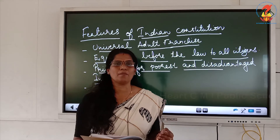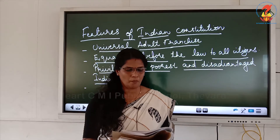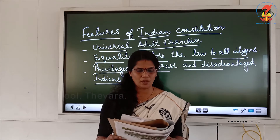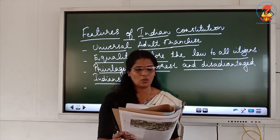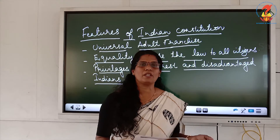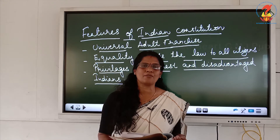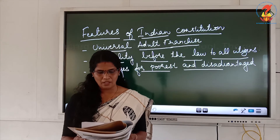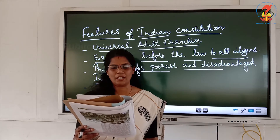In other countries such as the United Kingdom and the United States, this right was granted in stages. First, only men with property or aristocrats had the right to vote, then educated men were added, then working class men after a long struggle, and finally after a bitter struggle, women were granted the vote. Soon after independence, India chose to grant this right to all its citizens regardless of gender, class, or education. People above 21 years of age are allowed to vote in both central and state elections. This is known as universal adult franchise.